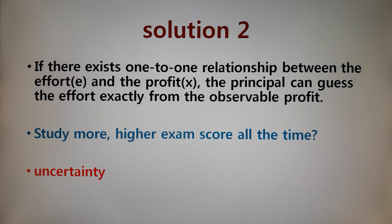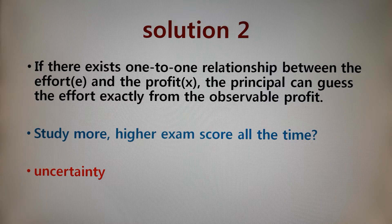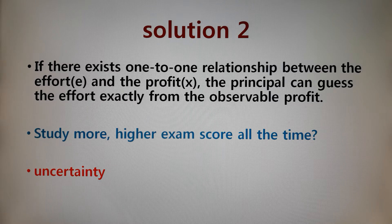Before we go to the second solution, I want to talk about a misunderstanding of economists. Many people think economists are consequentialists, which means if someone like Sarah did something with a good intention but the result was bad, economists would say Sarah did something wrong. Sarah insists her intention was good, but economists wouldn't listen. I am the first person to admit that we don't really give any weight to Sarah's intention.